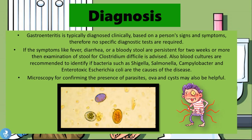The diagnosis of gastroenteritis. Gastroenteritis is typically diagnosed clinically based on a patient's signs and symptoms; therefore no specific diagnostic tests are usually required. If symptoms like fever, diarrhea, or bloody stools are persistent for two weeks or more, then examination of stool for Clostridium difficile is advised. Blood cultures are recommended to identify bacteria such as Shigella, Salmonella, Campylobacter, and Enterotoxigenic Escherichia coli if they are the cause. Microscopy for confirming the presence of parasites, ova, and cysts may also be helpful.